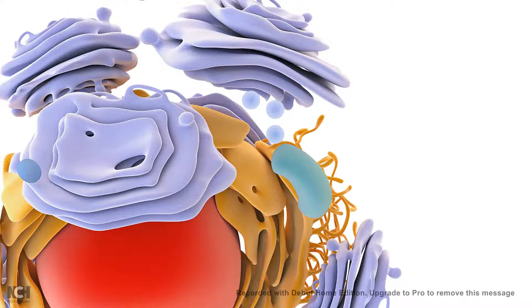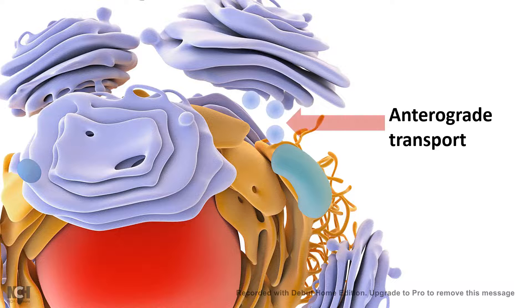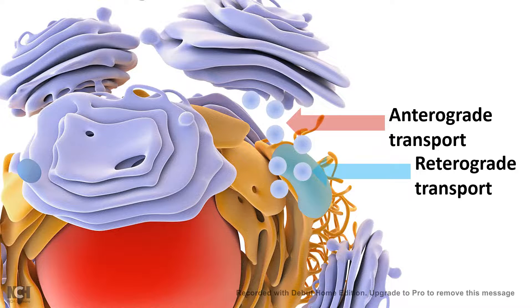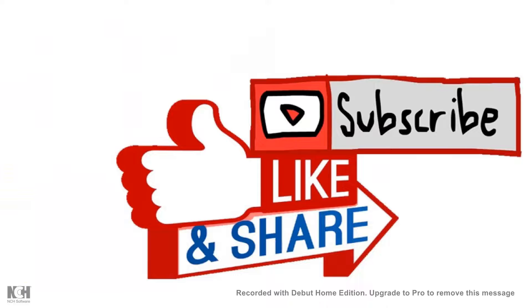In summary, anterograde transport may mistakenly take ER resident proteins toward the trans-Golgi network along with proteins destined for specific locations. Inside the trans-Golgi network, a sorting mechanism identifies ER resident proteins and sends them back to the endoplasmic reticulum via retrograde transport using COP1-specific vesicles.